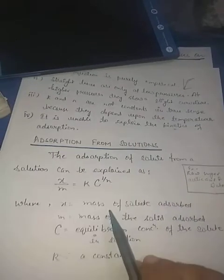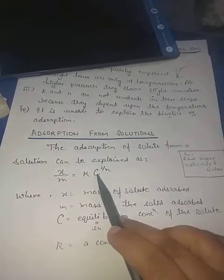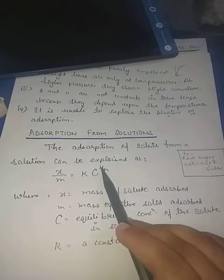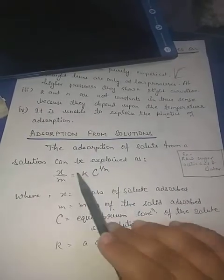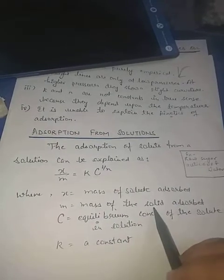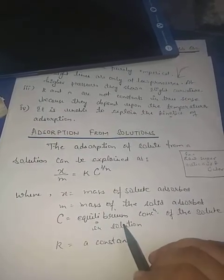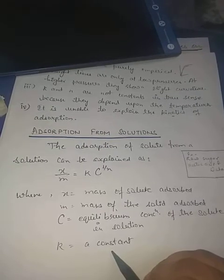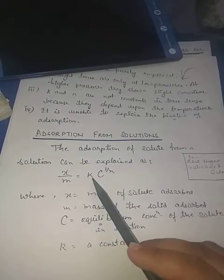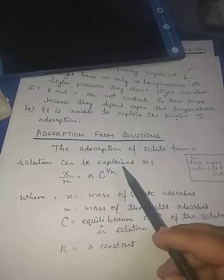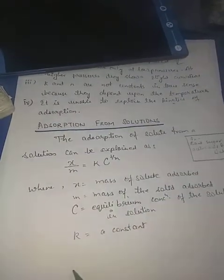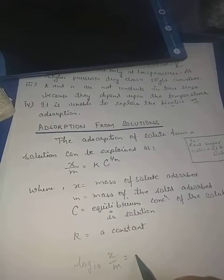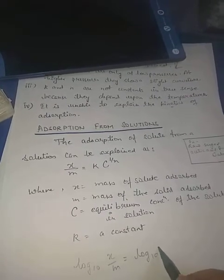In adsorption from solutions, the concentration changes. The equation is: X/M = K·C^(1/N), where X is the mass of the solute adsorbed, M is the mass of the solid adsorbent, C is the equilibrium concentration of the solute in the solution, and K is a constant. This can also be written as: log(X/M) = log(K) + (1/N)·log(C).